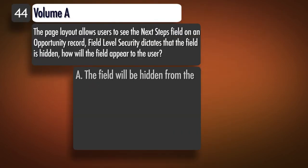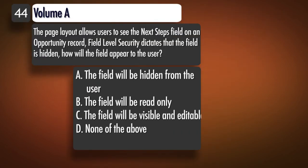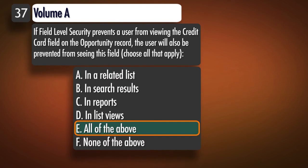Question 44, Topic 1: The page layout allows users to see the next steps field on an opportunity record, but field level security dictates that the field is hidden. How will the field appear to the user? A. The field will be hidden from the user. B. The field will be read-only. C. The field will be visible and editable to the user. D. None of the above. Correct answer: A.